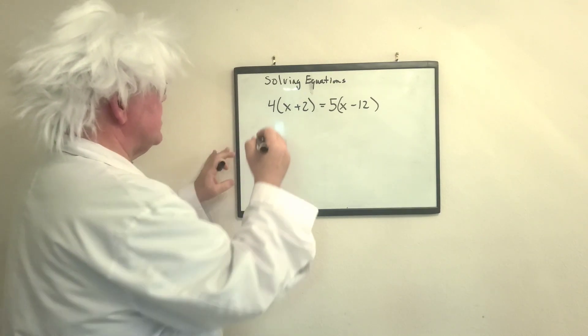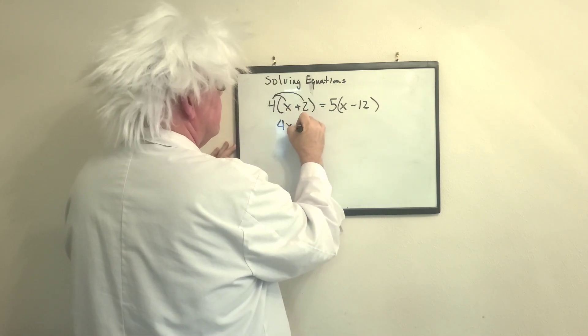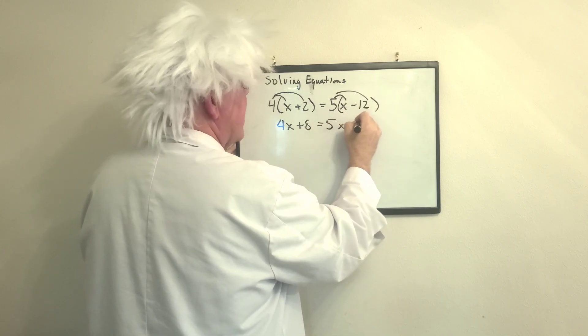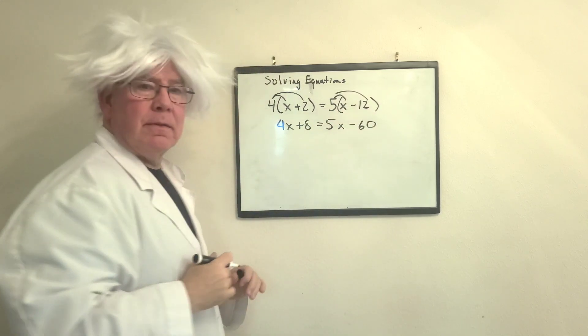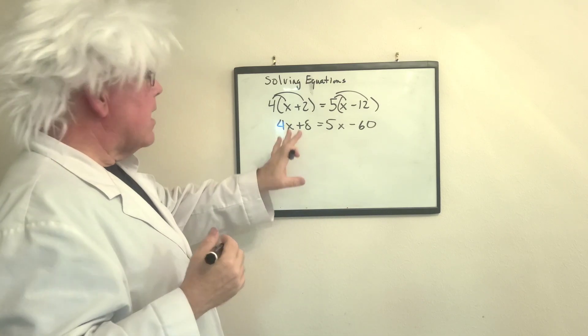Okay, had a chance to do it. So, we're going to do this first. This is 4x plus 8. We're going to do this. This is going to be 5x minus 60, okay? Professor Algebra can do math in his head very quickly. You need to learn that too.